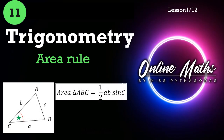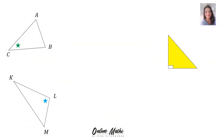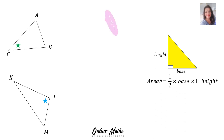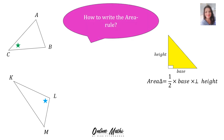Hello everybody. In this lesson I will discuss the area rule in trigonometry. The yellow triangle on the right hand side is a right angle triangle, and the area for a right angle triangle is half times base times perpendicular height. Now I'm going to show you what the area rule is all about. Remember you must also know the proof of the area rule, and that you find in video 10. Here I'm only going to discuss the area rule and some examples.